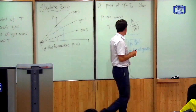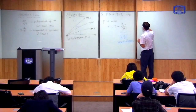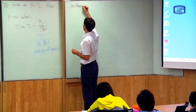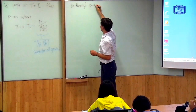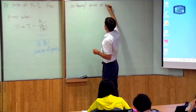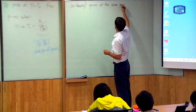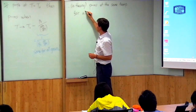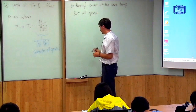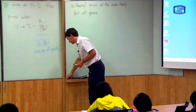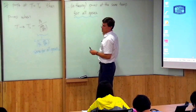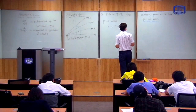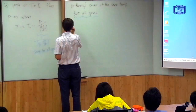And this is the point we call absolute zero. So therefore, in theory — because you can't really get there exactly — but in theory, the pressure goes to zero at the same temperature for all gases. So this is what's important: it is universal. It doesn't depend upon the system. This temperature at which the pressure goes to zero is always the same. So this temperature is called absolute zero.